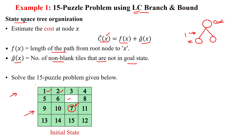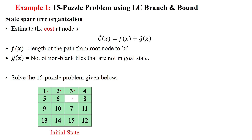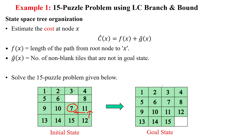The problem is given: we have to solve the 15-puzzle. In the initial state, tiles are misplaced — for example, seven, eleven, and twelve are misplaced. So the number of misplaced tiles is three. We have to move all tiles into the goal state so that seven, eleven, and twelve are each in their correct goal positions. The blank slot is at position number 16.